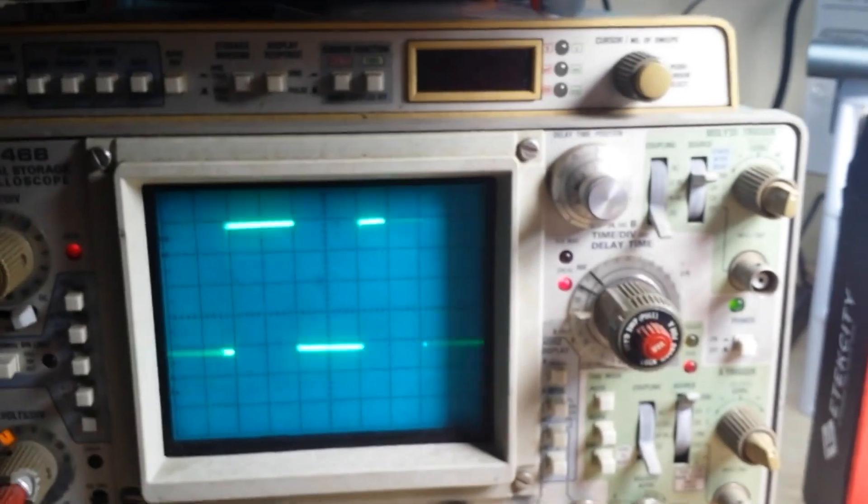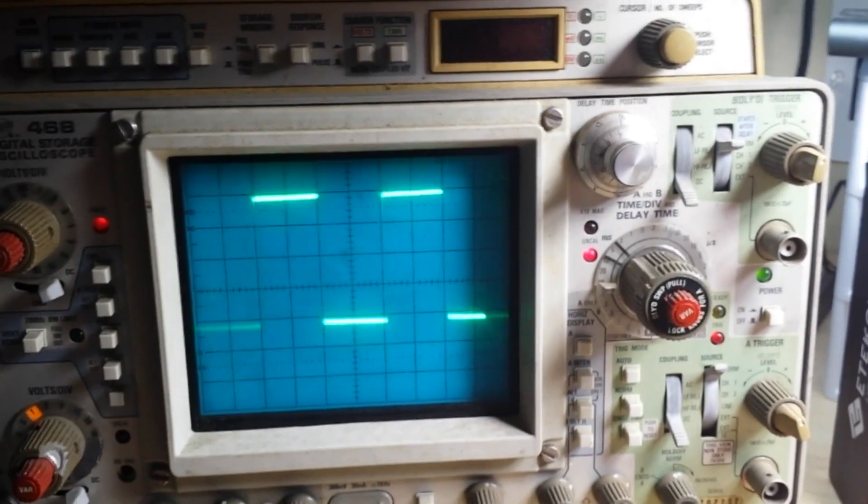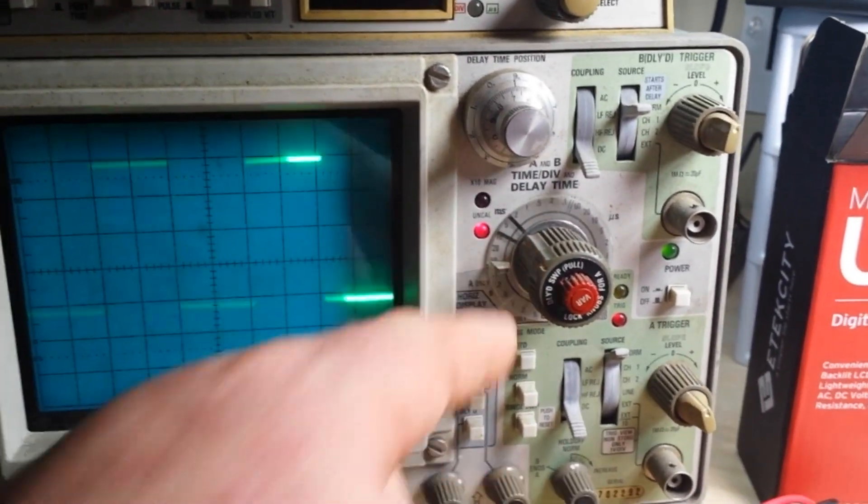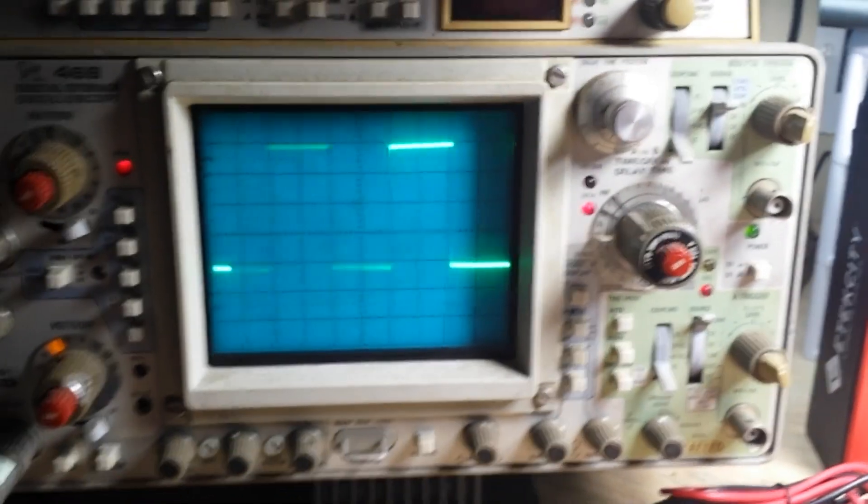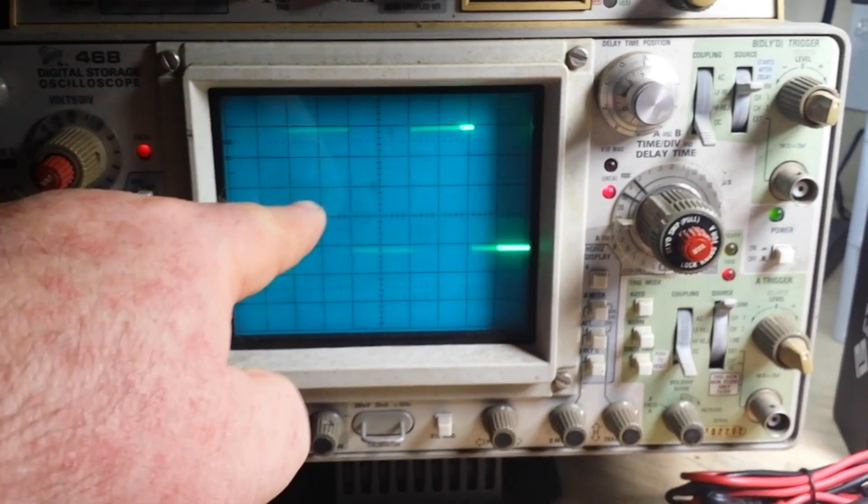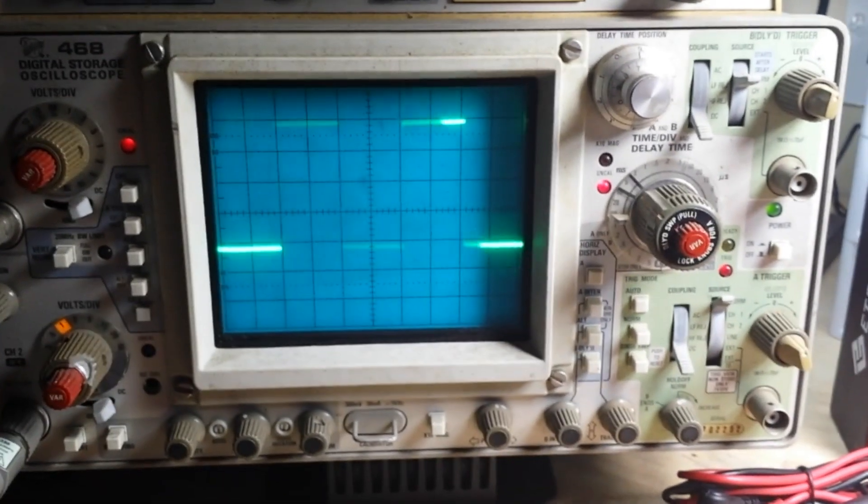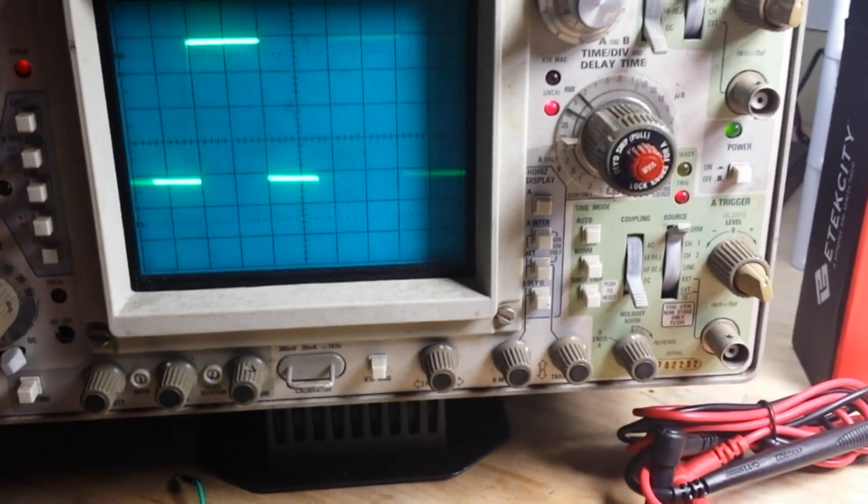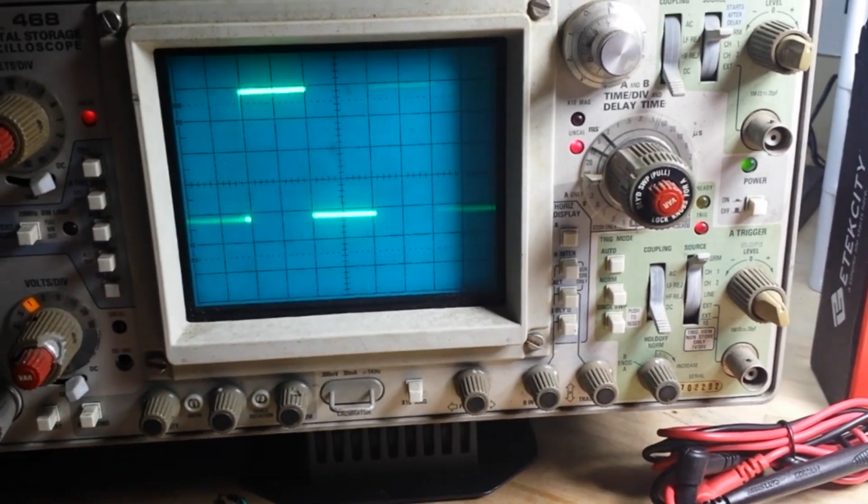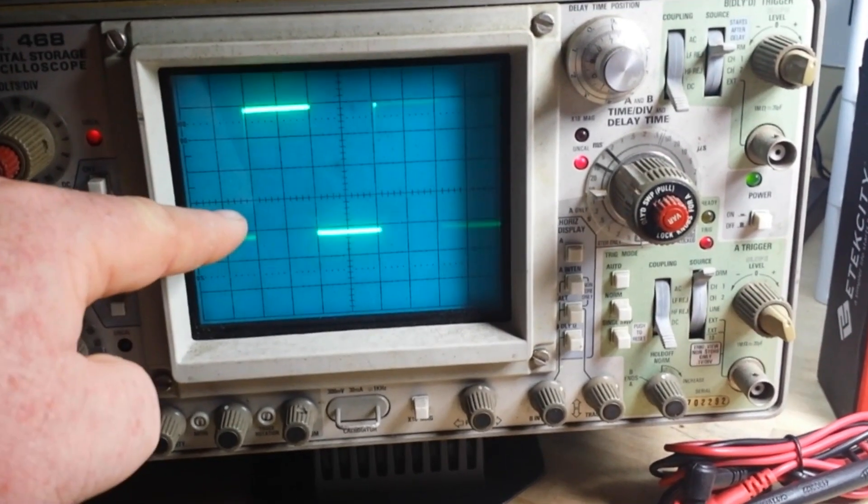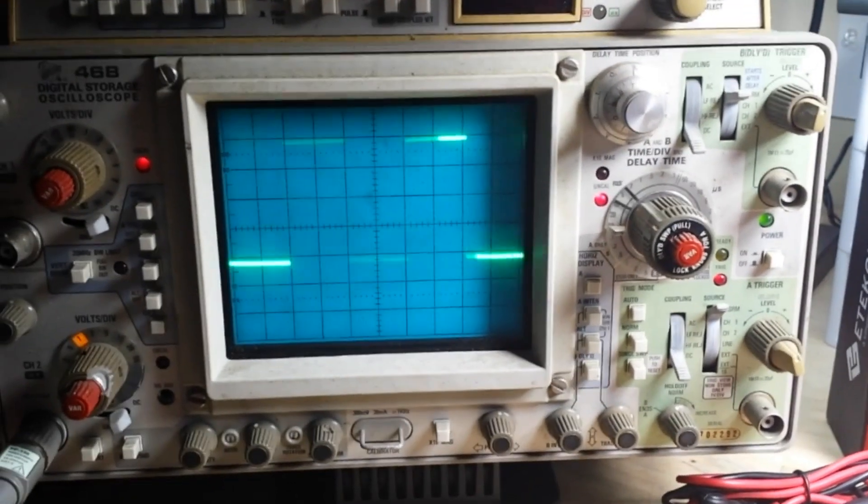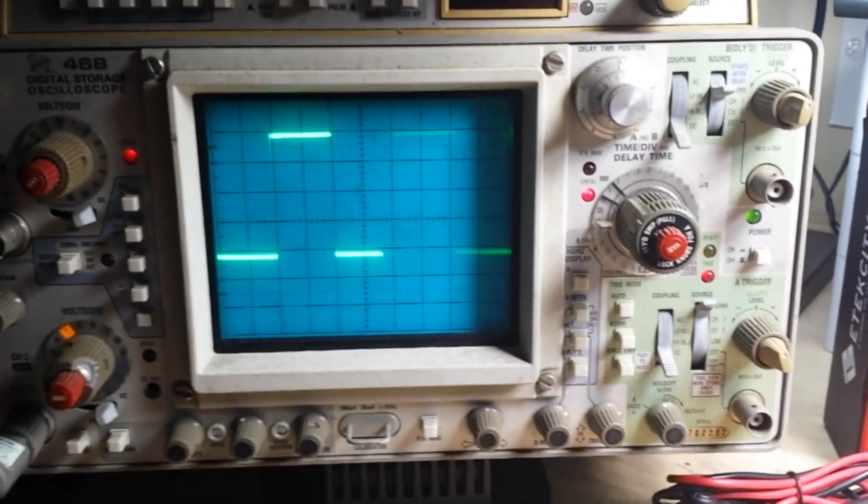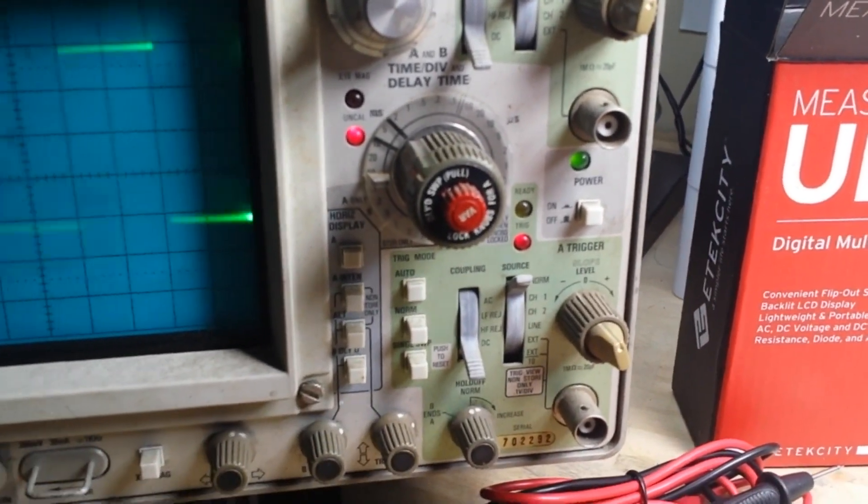On the beautiful Tektronix 468B. Now if you look here at our horizontal, we're at 5 milliseconds per division. So there's 5, 10, 15, 20 milliseconds, that equals about 50 hertz. And then on our volts per division, we are at 1 volt per division. So 1, 2, 3, 4 volts peak to peak. That's how we did it in the old days, boys and girls. Not going to find any auto set button on here.